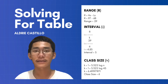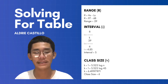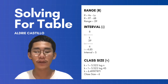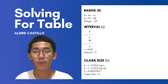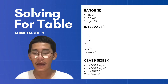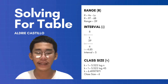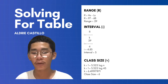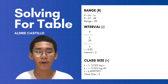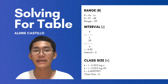The second step is the class size. In getting the class size, we need to multiply 3.320 log by N, the total number of data, and after we get the product, we add 1 to get the class size. In our data, N is 45. So 3.320 log multiplied by 45 is 5.491971971, plus 1 is equal to 6.491971971. We need to round off this number, so the class size is 6.